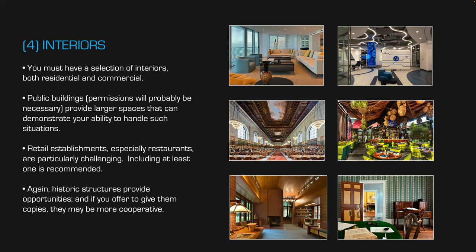Number three is interiors, and this is really important. You have to have a good selection of interiors, both residential and commercial. Public buildings are great because their spaces are usually bigger and you can show a client that you're able to handle really large spaces. Places like restaurants are a nightmare, and if you can get a chance to photograph one to show that you can handle all the thousands of little details that go into making a great restaurant photo, do that and have that in your portfolio.